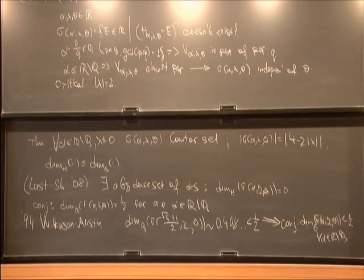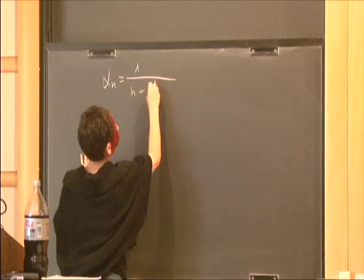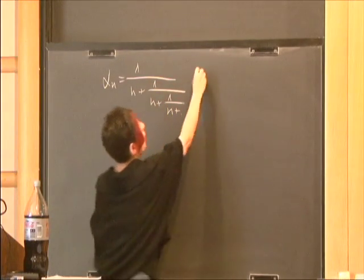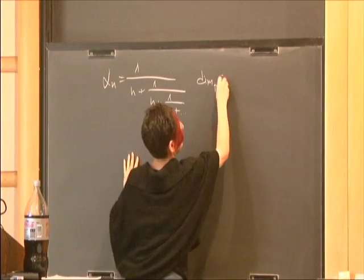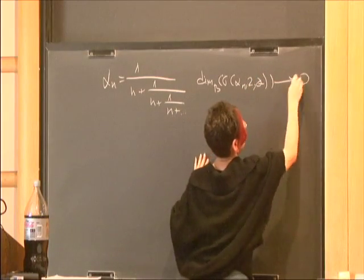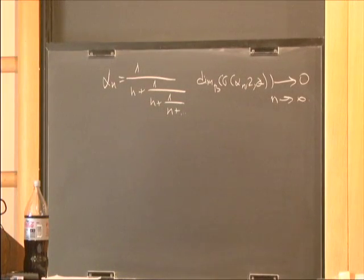They also provided numerical and analytic evidence that for irrational alphas of the form α_n equal to 1 over (n + 1 over (n + 1 over n...)), the box-counting dimension of the spectrum of the critical Almost-Mathieu operator tends to 0 when n tends to infinity. Therefore, it became clear that different irrationals should lead to completely different fractal properties of the spectrum, and that characterizing the fractal dimension of the spectrum is a very rich subject.